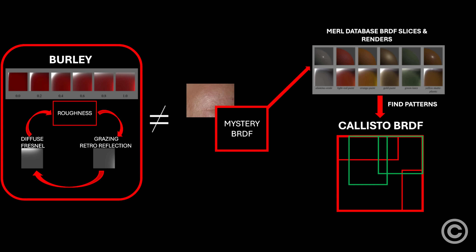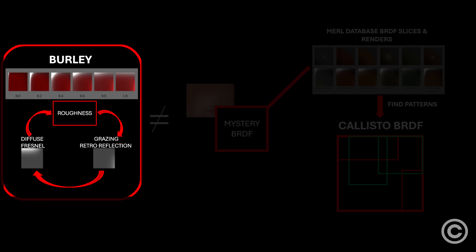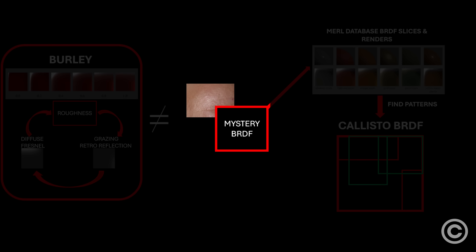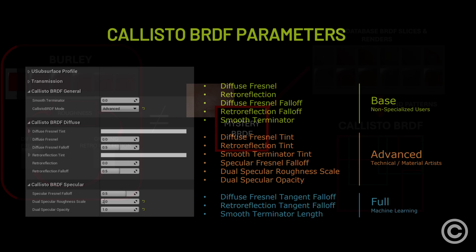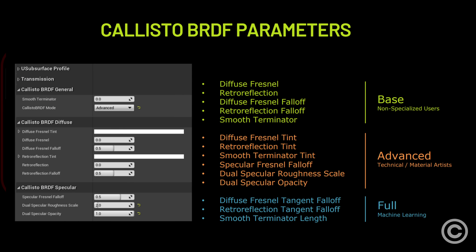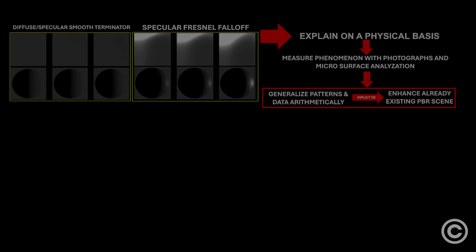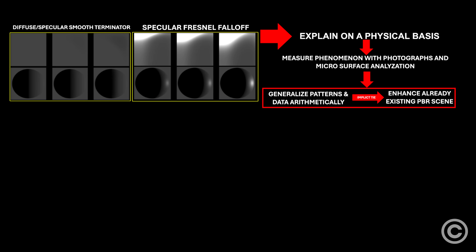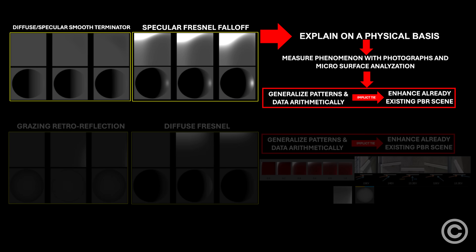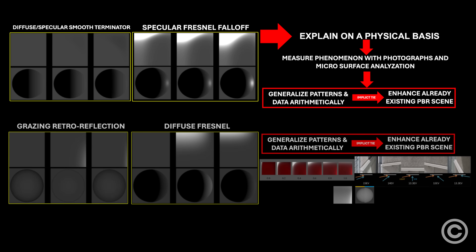The other issue with the Callisto BRDF is that it has no implicit behavior. While it's understandable to drop Burley because of an unbalanced implicit approach for skin, and maybe supporting special-case BRDF values is a good idea, the default BRDF behavior could have introduced some form of implicit controls for all the defined patterns. The Smooth Terminator and Specular Fresnel falloff must be researched and explained physically, so we can efficiently tie their expression arithmetically to basic PBR values like the implicit Burley diffuse model — because implicit behavior provides automatic enrichment to digital content.